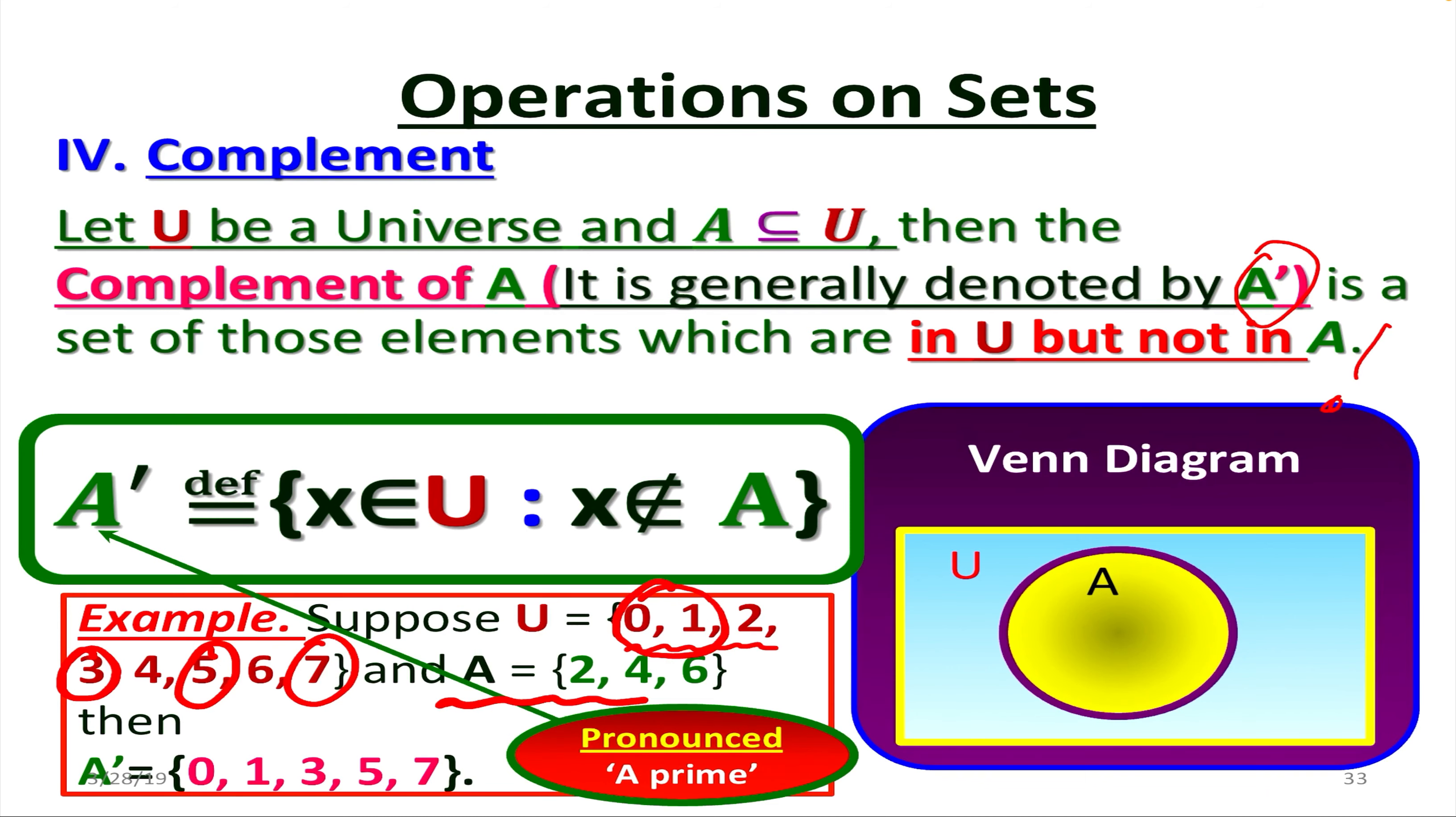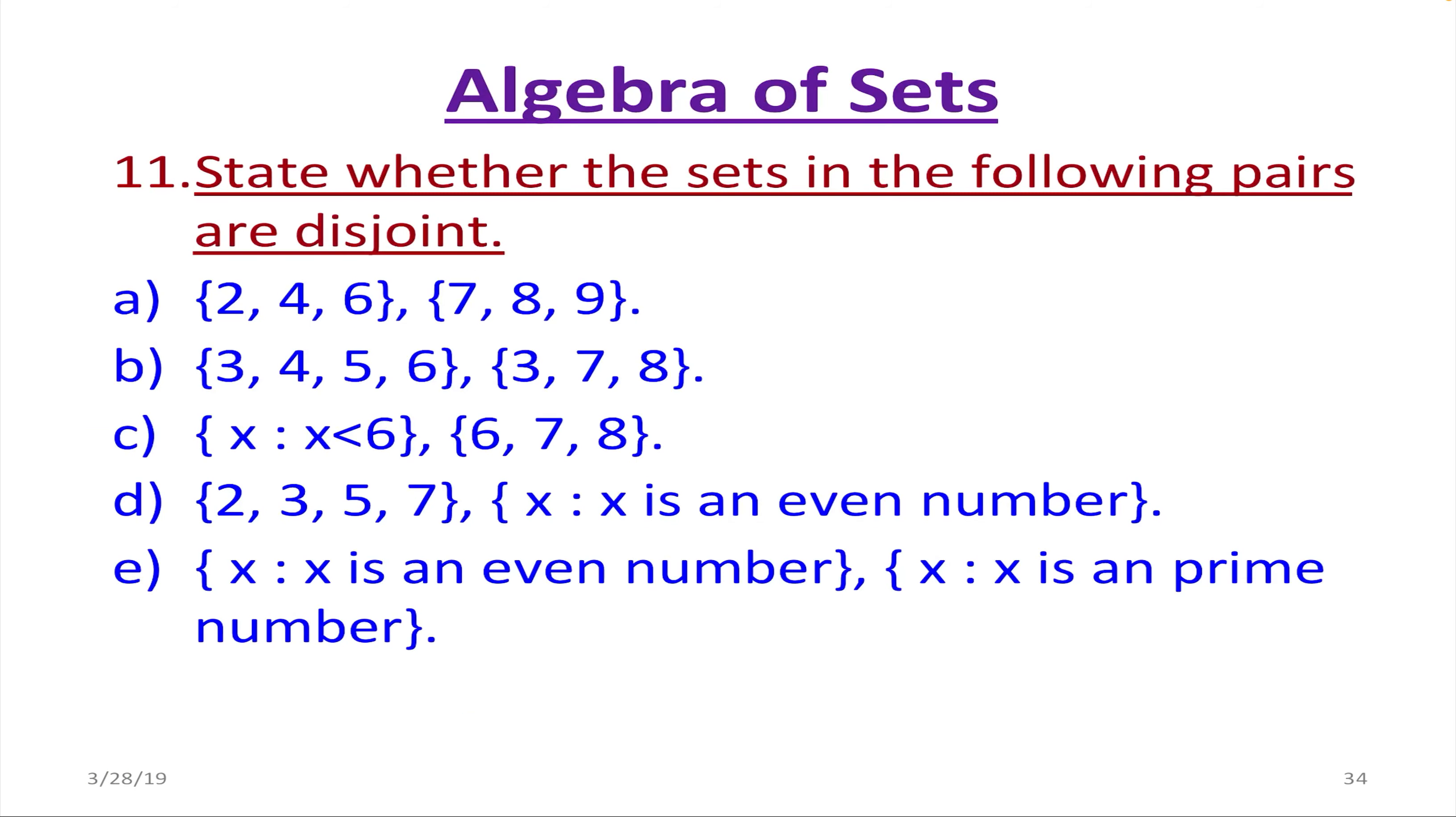So we pronounce it A prime or sometimes A dashed. So when it comes to Venn diagram to represent the complement, all the part outside of set A, that's going to be the complement, so this red shaded part. So again, it's the outer part, the part which is outside of A. There are some problems to carry out.